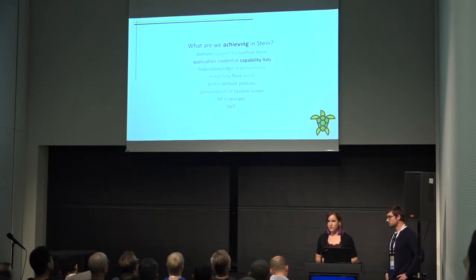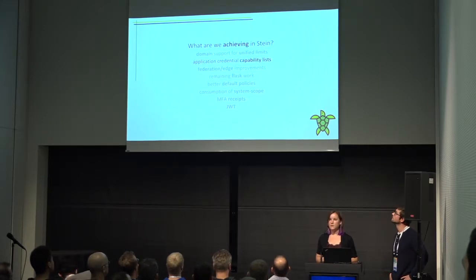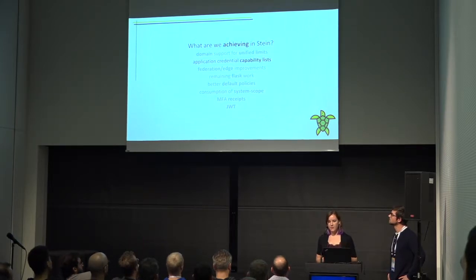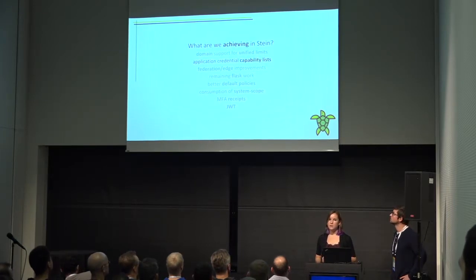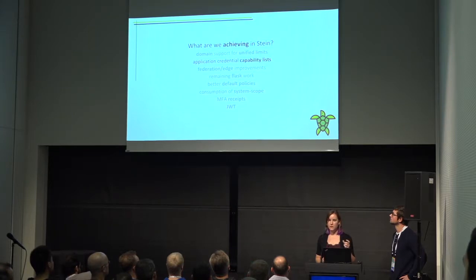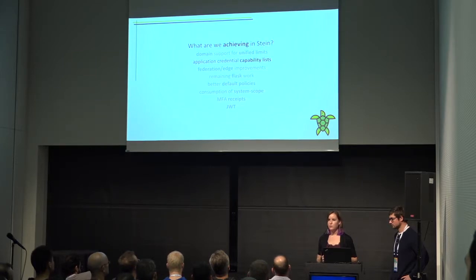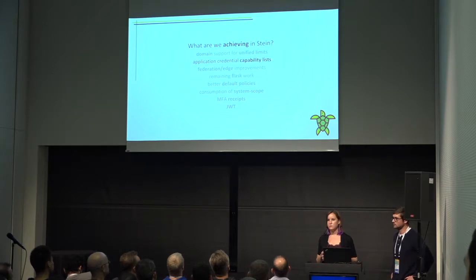The next step for application credentials — a feature we introduced in Queens — is to implement fine-grained access control. We're going to be doing that by adding API capability lists as a property of an application credential, so that a user, when creating their application credential, can really restrict it to only being able to call certain APIs. This gives the user a lot more control over how this credential is used, even more so than what Keystone roles will allow, since those roles are not very flexible right now.